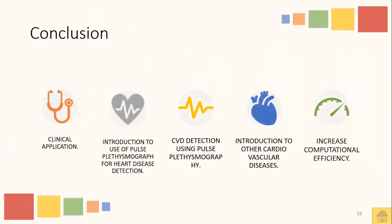Moving toward the conclusion, the proposed diagnostic system can be used in clinical applications due to low computational complexity, and results in terms of accuracy clearly show the feasibility of the proposed system. The system can be used as a diagnostic decision support system that assists doctors in making decisions about cardiovascular diseases. It can be concluded that classification using pulse plethysmograph signals is a new domain, and working on it can lead to new systems that are way better than PPG, PCG, and ECG. It is also non-invasive and gives better results at very low cost. That's all from my side. Thank you.